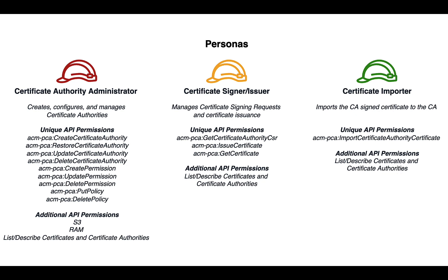Today we'll be using three personas to illustrate these concepts. The first persona is the Certificate Authority Administrator, who is responsible for creating, configuring, and managing certificate authorities. They require many permissions to set attributes about the certificate authority, as well as physically creating the certificate authority using AWS API calls.